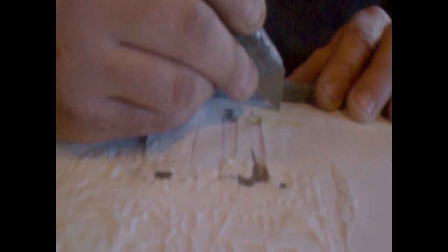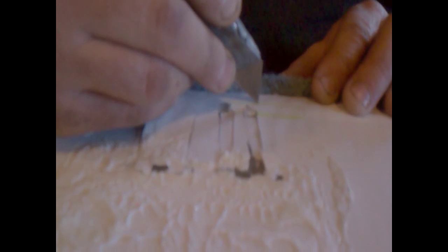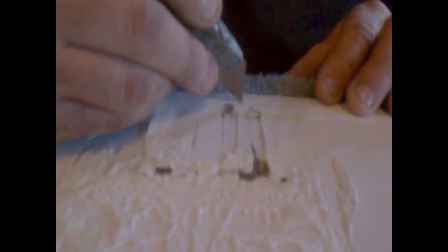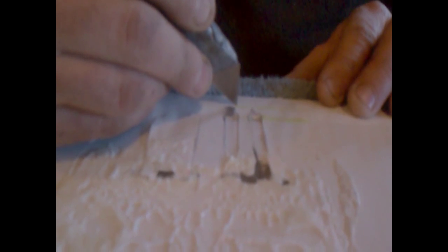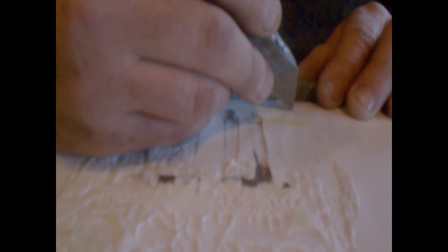Now, there's actually two bus bars here. There will be one under the other and the one closest to the outside of the panel is the negative bus bar. The one closest to the center of the panel is the positive bus bar.